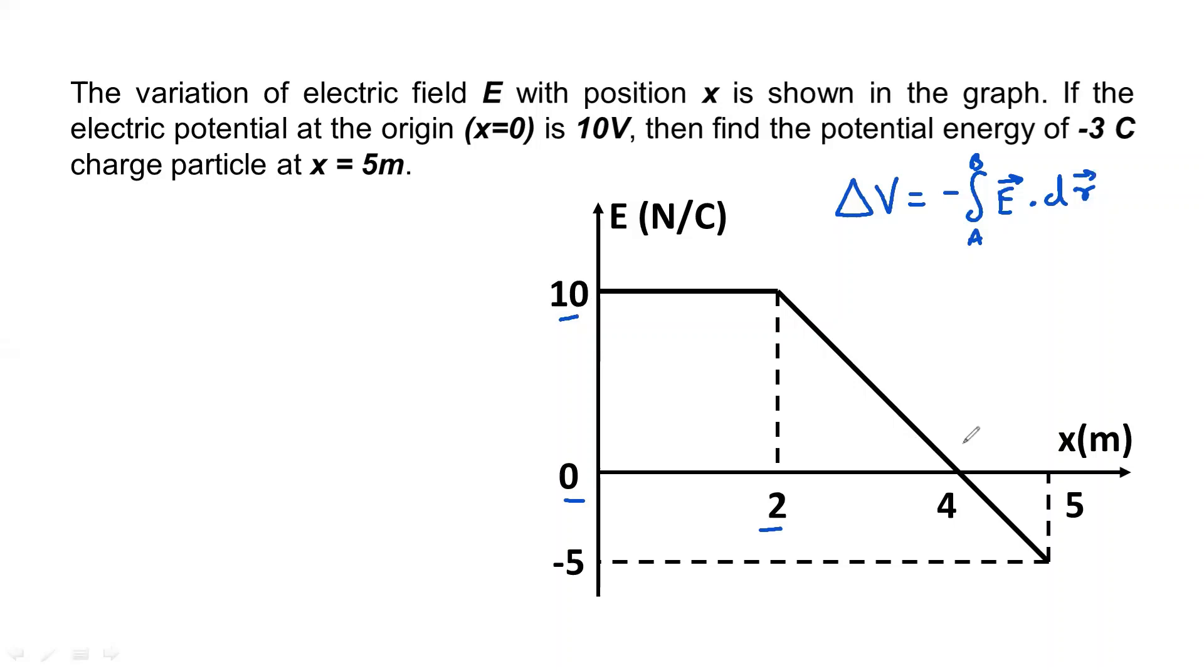And at x equals 4, the electric field is 0, and here is negative 5. Now let's solve the problem. Here is the variation of electric field E with position x is shown in the graph. If the electric potential at the origin x equals 0 is 10V...